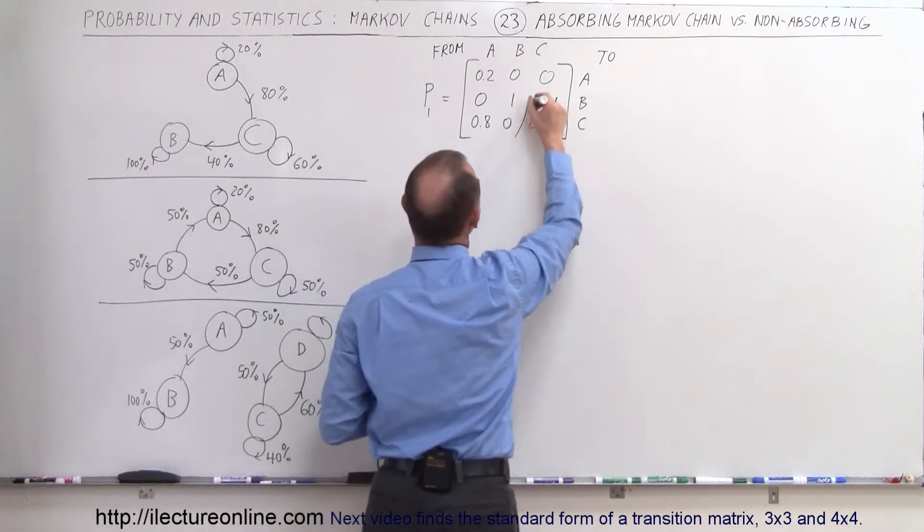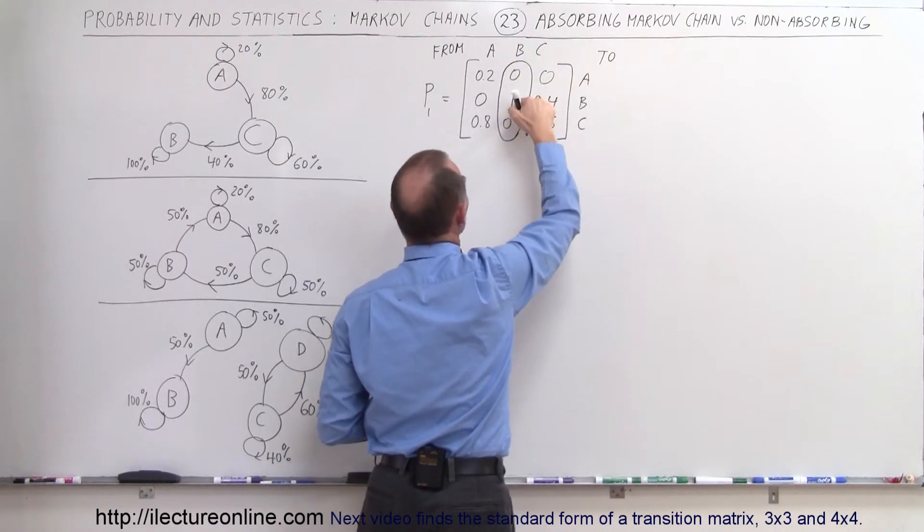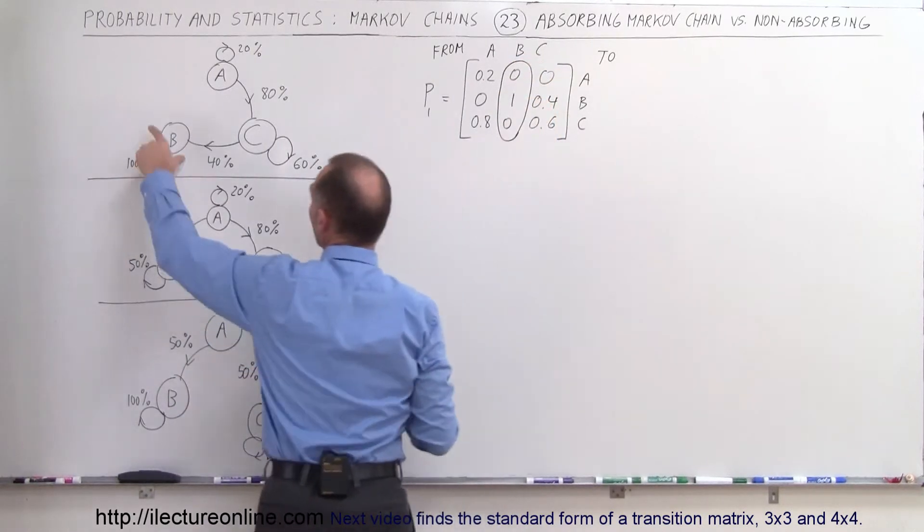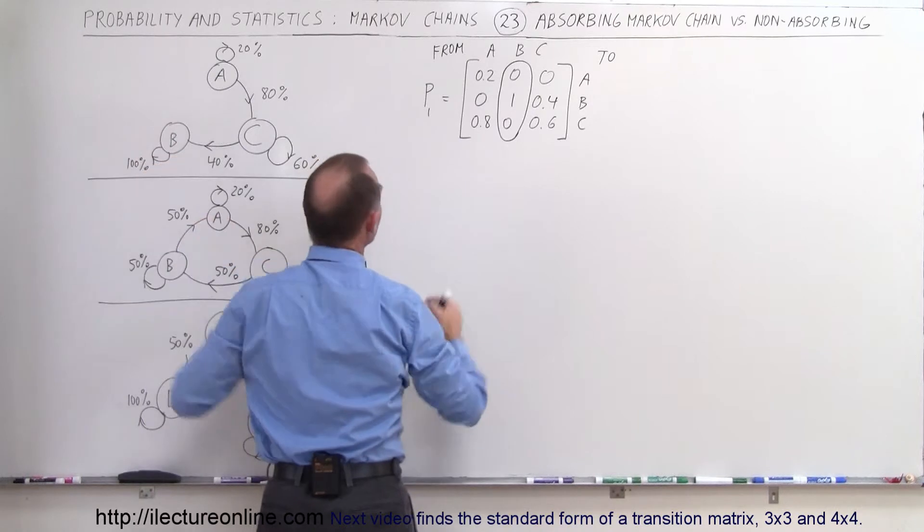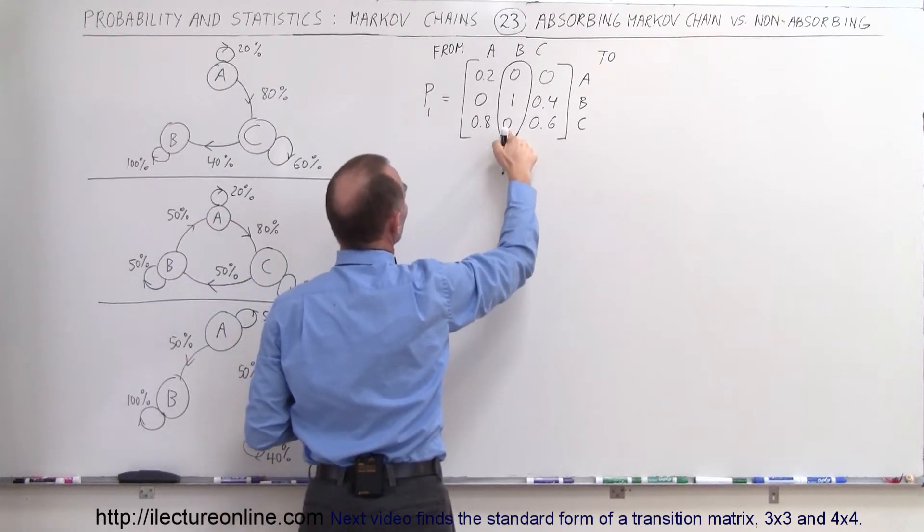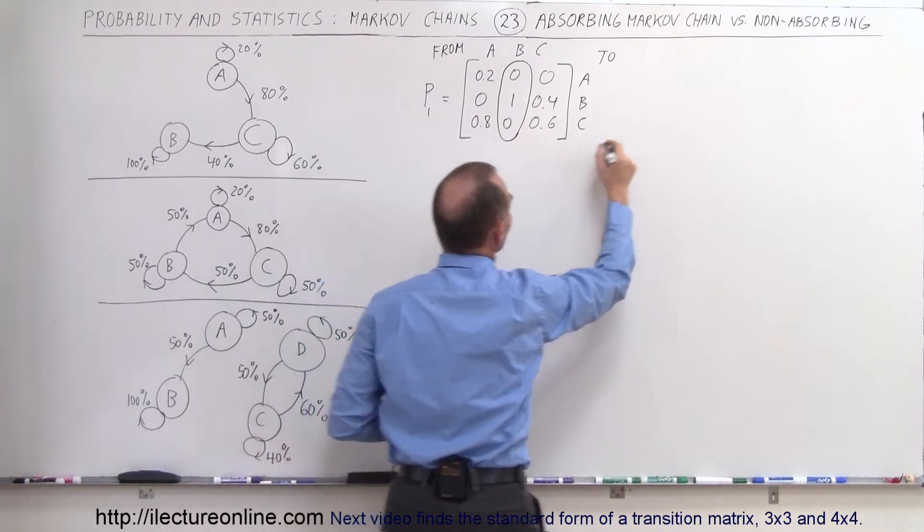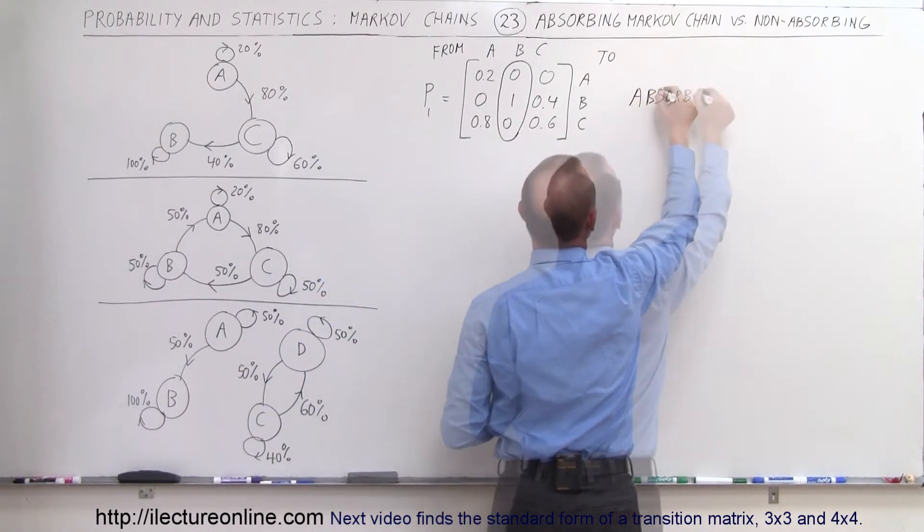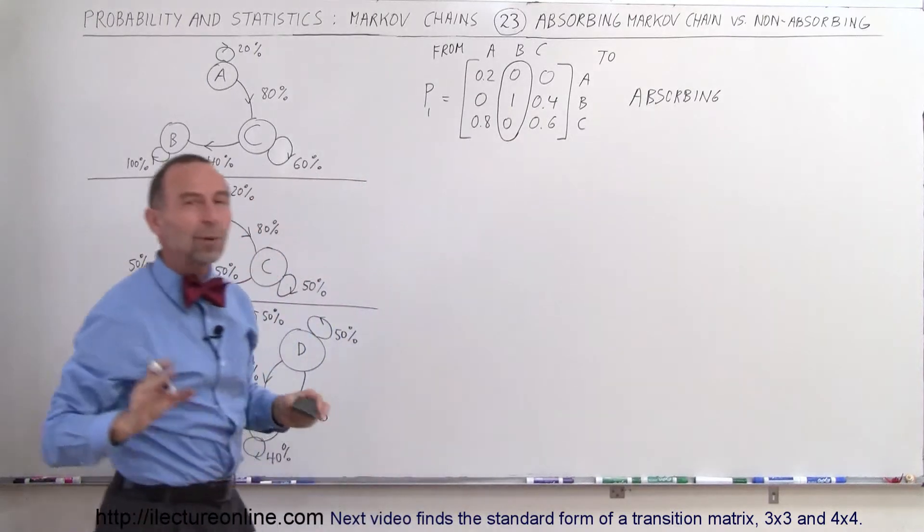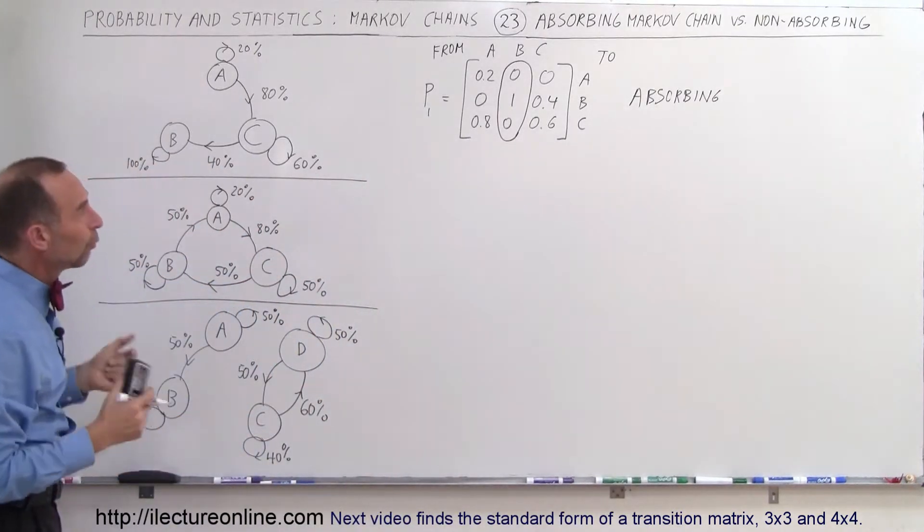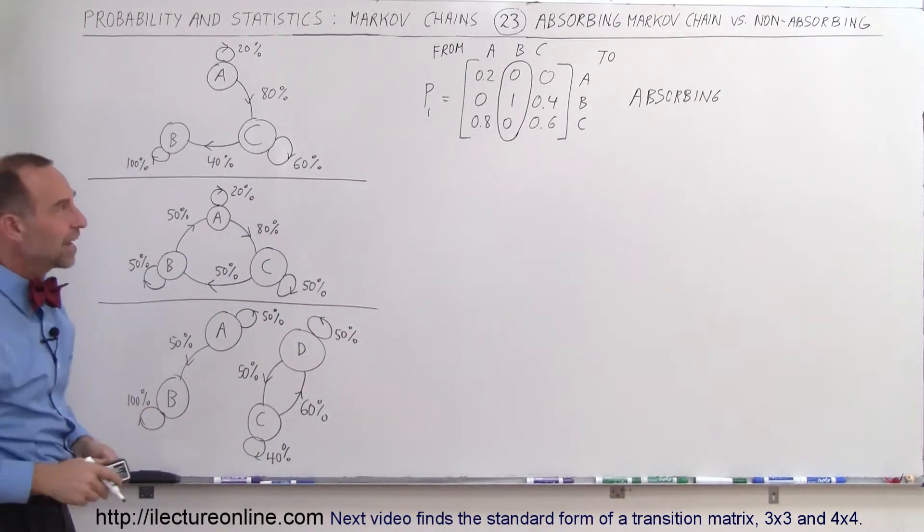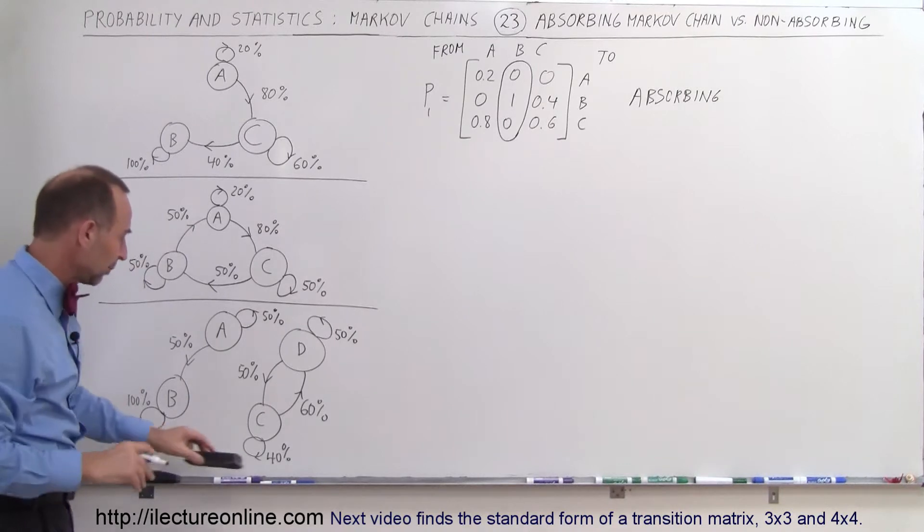Notice we have one column here where one of the elements is 1, meaning all of the customers at B will remain at B and none of the customers will go to either A or to C once they're at B. So therefore, we can say this is absorbing. Meaning this is what we call transition matrix for an absorbing Markov chain. All right, let's go to our second one right here.